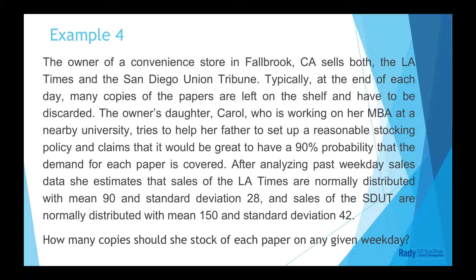The owner of a convenience store sells both the LA Times and the San Diego Union Tribune. Typically, at the end of each day, many copies of the papers are left on the shelf and have to be discarded. The owner's daughter, Carol, tries to help her father set up a reasonable stocking policy, and claims that it would be great to have a 90% probability that the demand for each paper is covered.